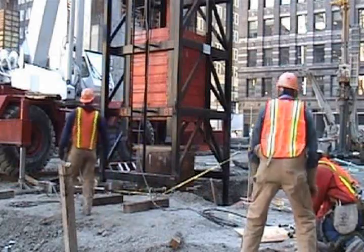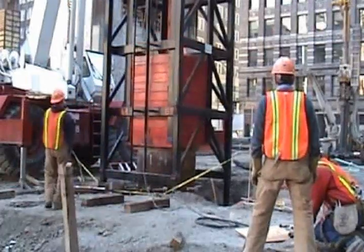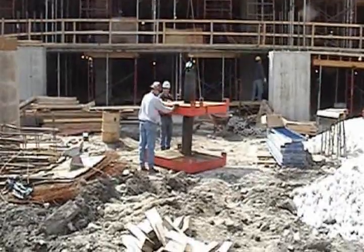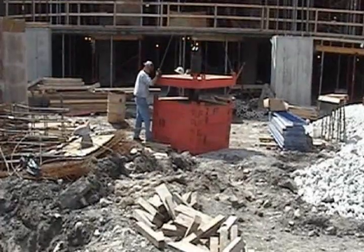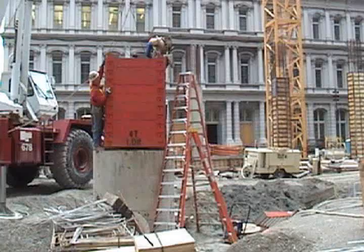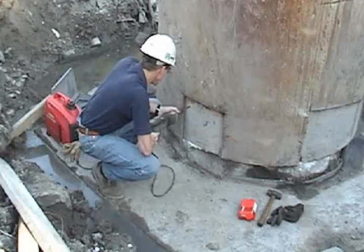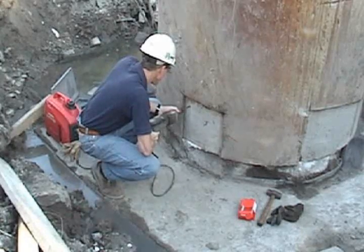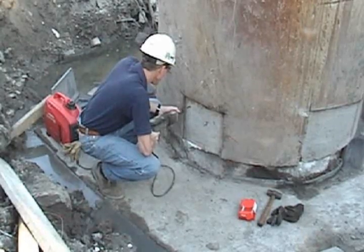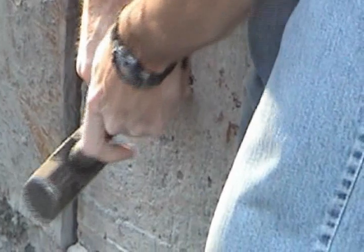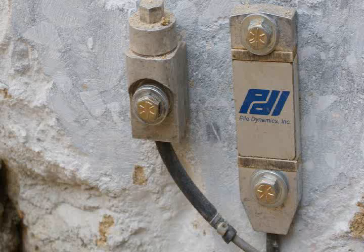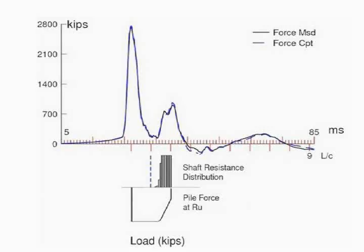A large drop weight is necessary for the test, and in this case it is modular. A crew stacks the modular blocks until a sufficiently large weight is achieved. An engineer attaches accelerometers and strain transducers to the upper portion of the shaft. These instruments measure how the shaft responds to the impact of the drop weight, and the measurements are then used to calculate the soil resistance.